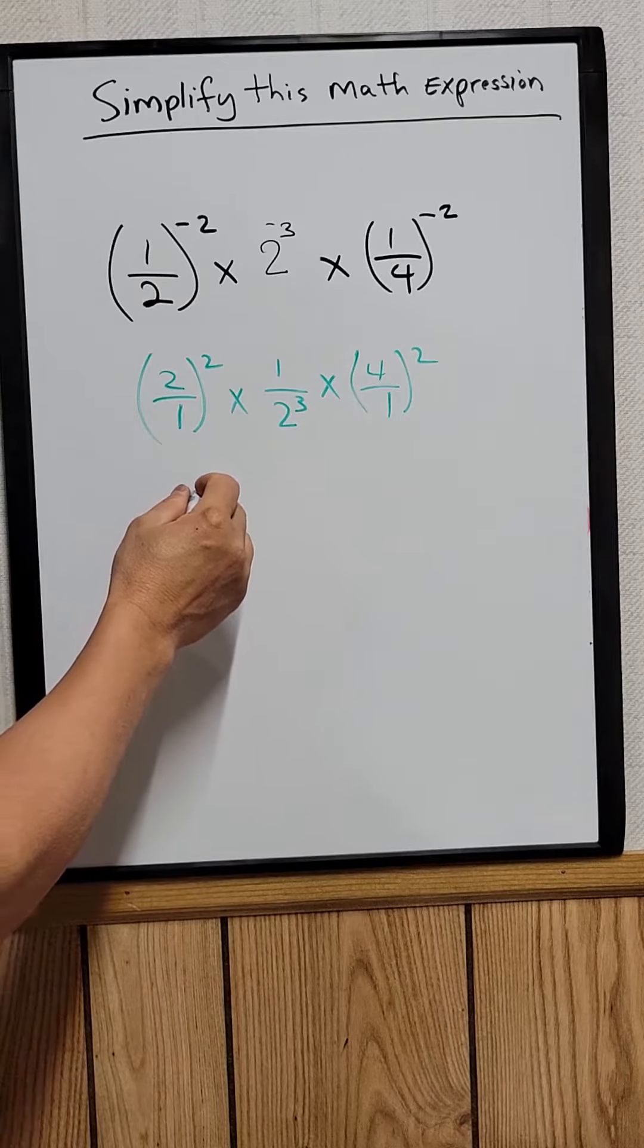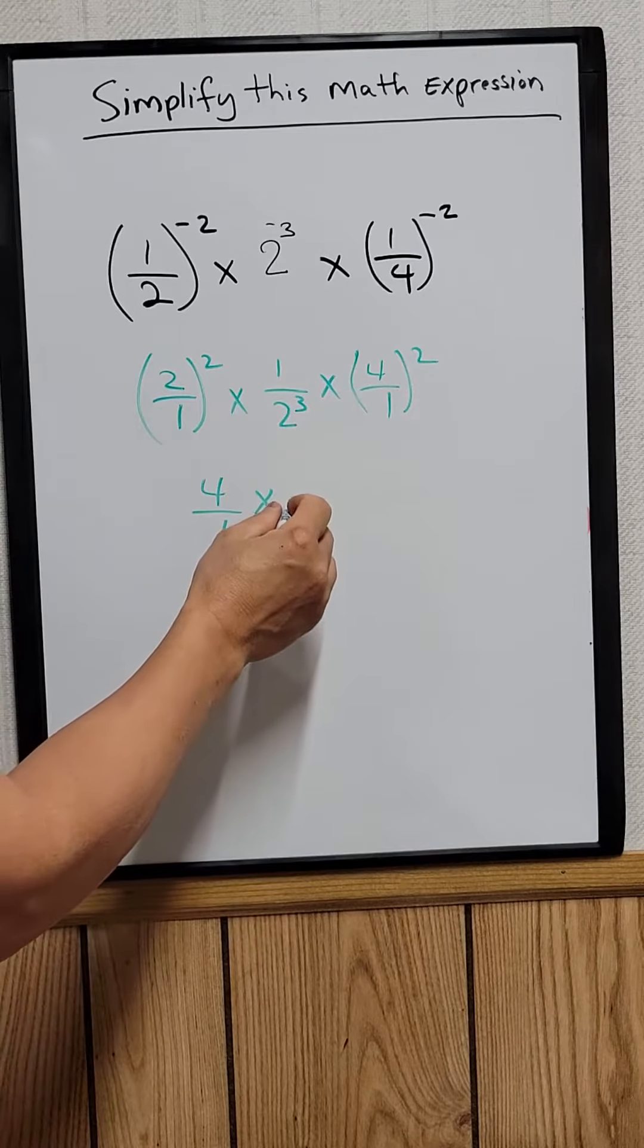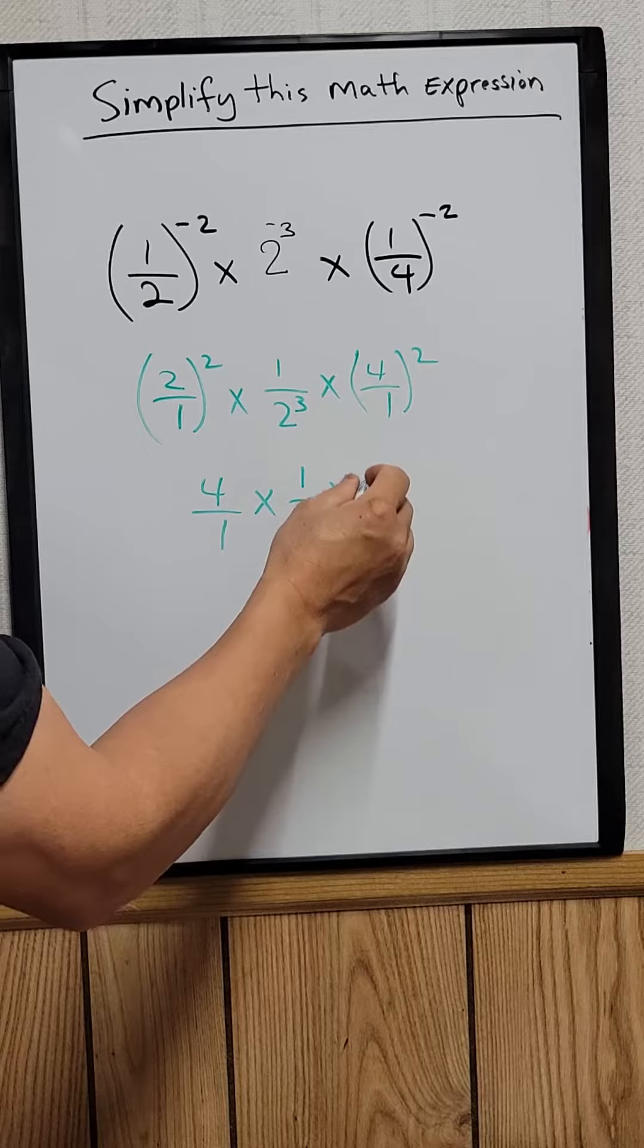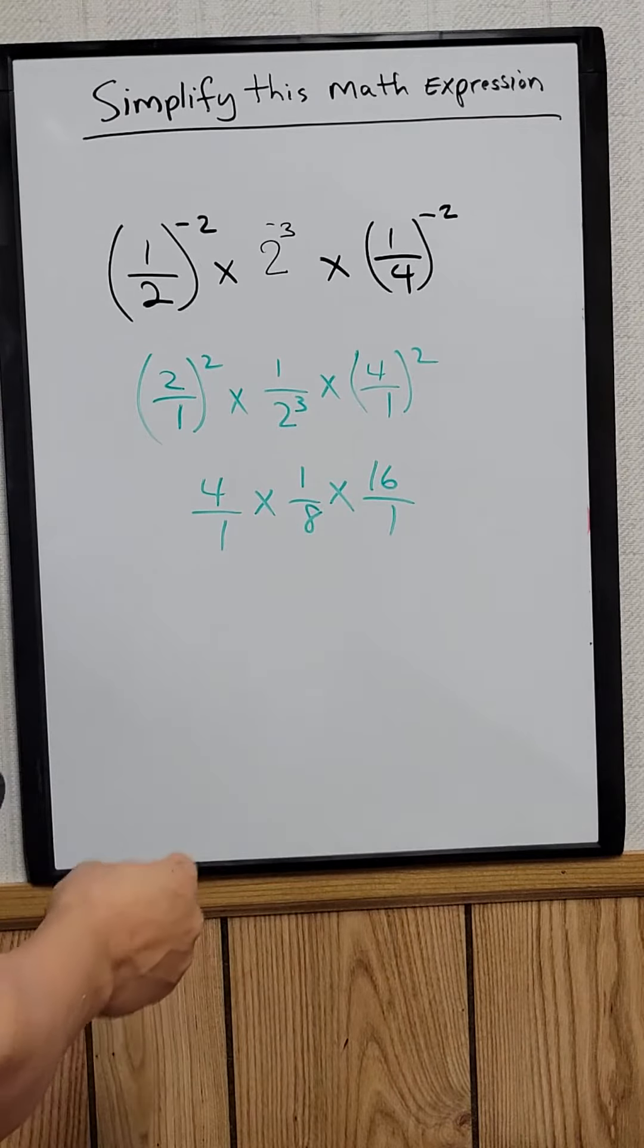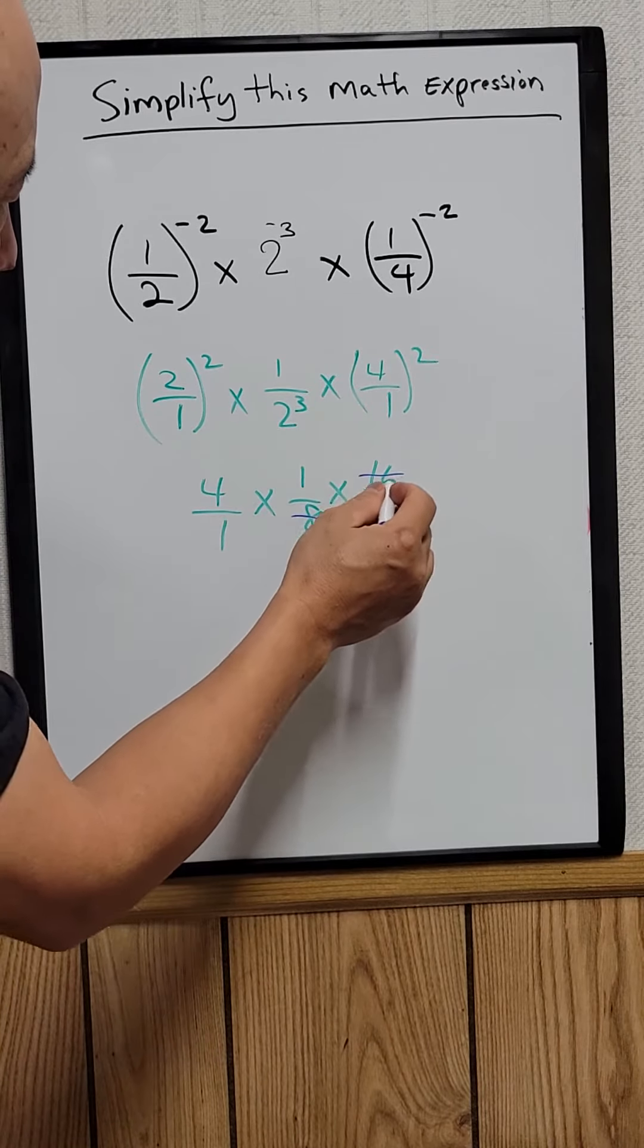This one is four over one times one over two to the third. Two to the third is equal to eight, and then times sixteen. Let's cancel with this: eight and sixteen will be just two.